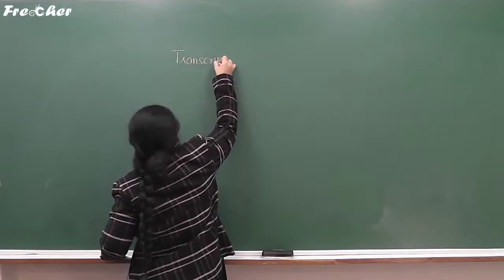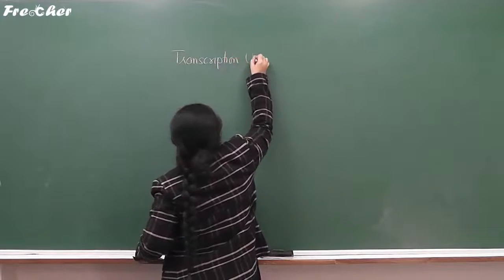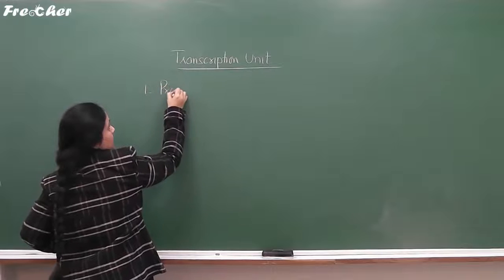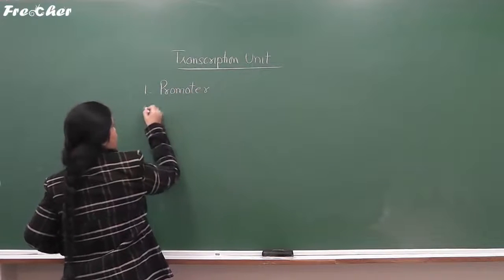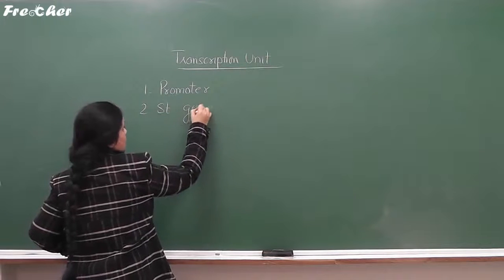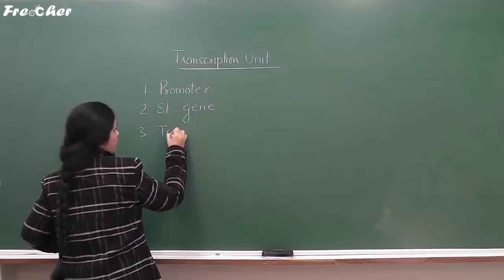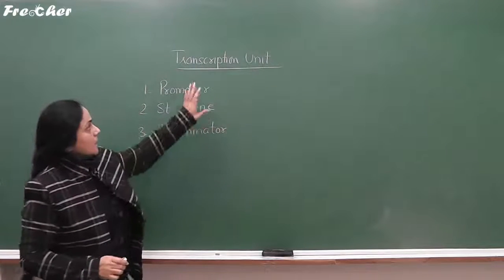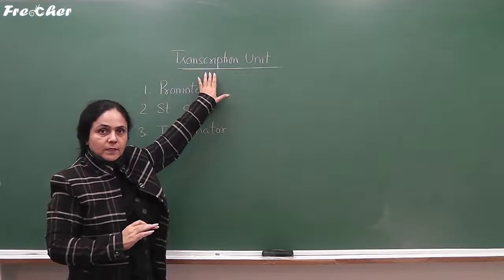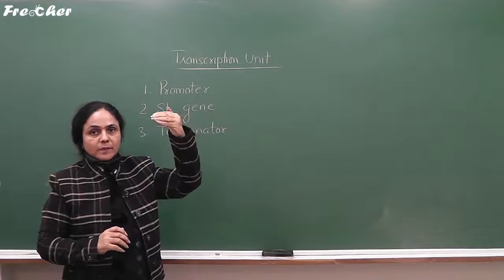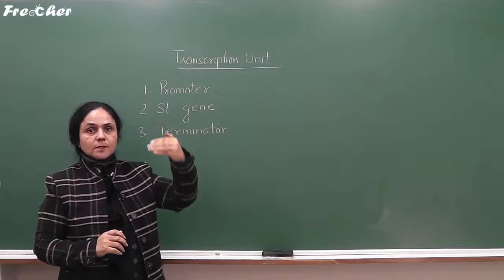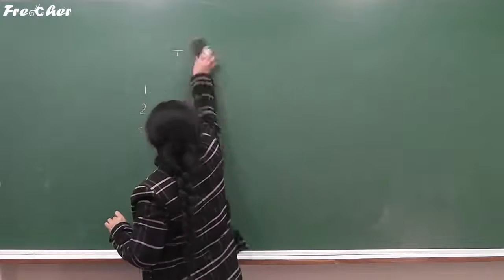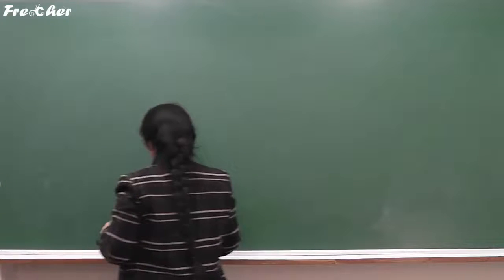A Transcription Unit consists of a promoter, structural gene, and terminator. The Transcription Unit is that part of DNA which forms RNA. There are many transcription units on a single molecule of DNA. This transcription unit is having a promoter, structural gene, and terminator.